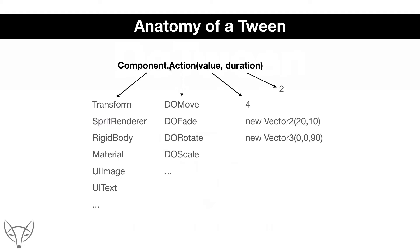The action is specific to DoTween — things like DoMove, DoFade, DoRotate, DoScale, and similar. A value is often a number, but could also be a pair of numbers like new Vector2(20, 10), or a triple of numbers like new Vector3(0, 0, 90). The duration is a single number representing the duration in seconds.